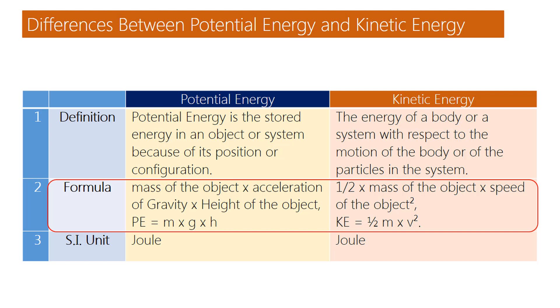Formula of Kinetic Energy: Half into mass of the object into speed of the object squared. KE is equal to half into m into v squared.